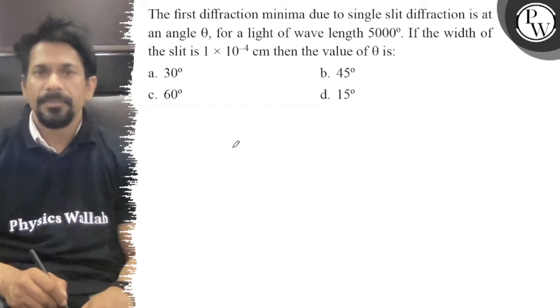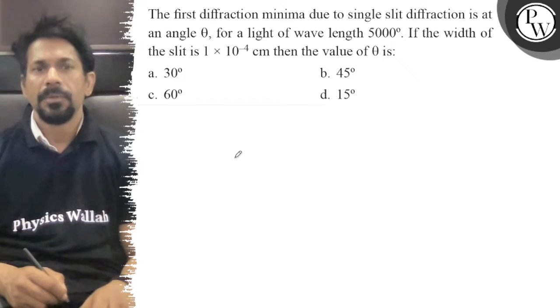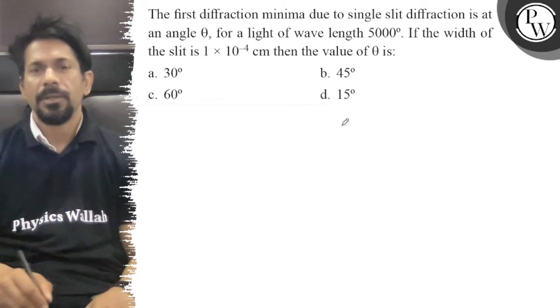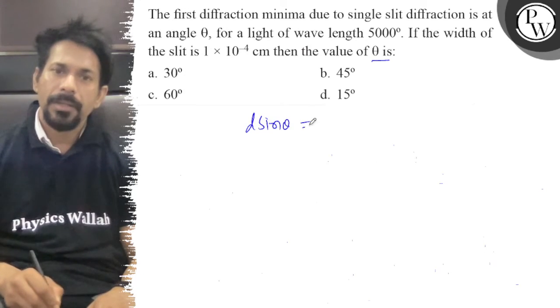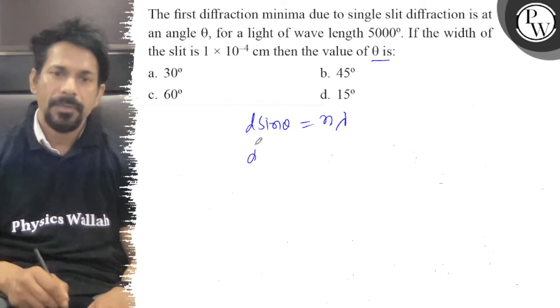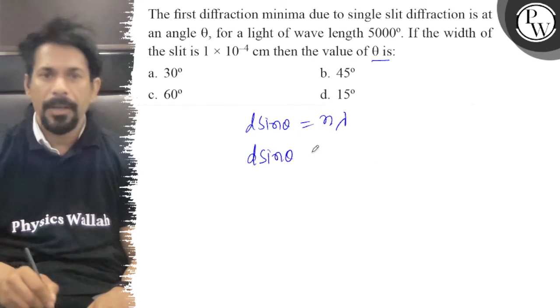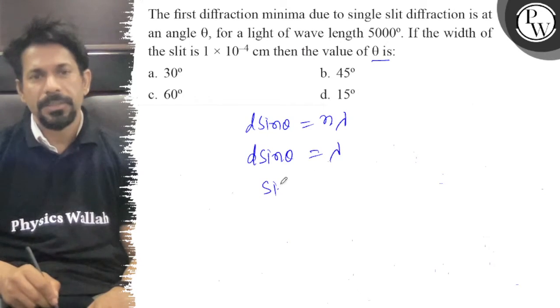So the first diffraction minima due to single slit is at theta. The condition is d sin θ equals nλ. For the first minima, d sin θ equals λ, so sin θ equals λ/d.